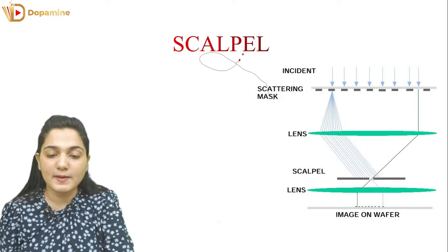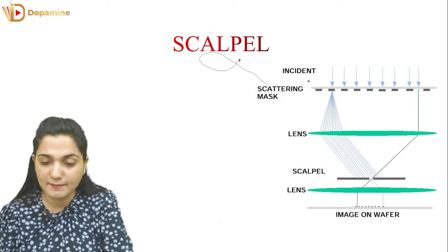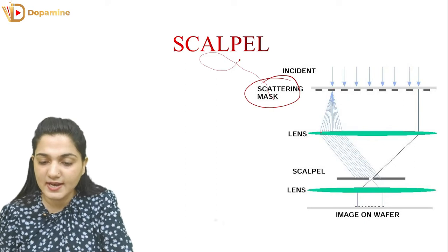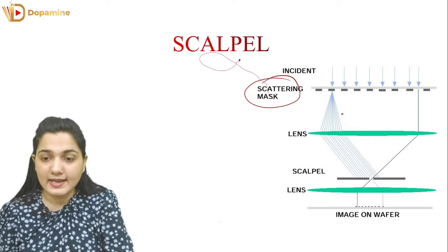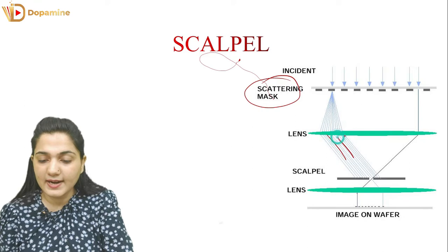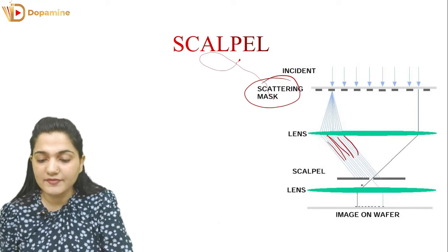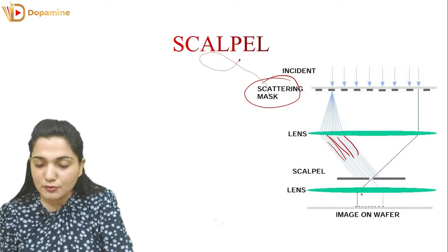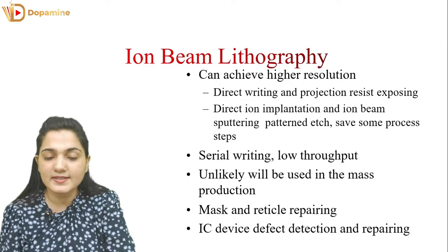Now we have the SCALPEL System. Here we have an Incident Electron Beam which is passed through a scattering mask — it will scatter. This Scattered Electron Beam passes through a lens, and we get an even Electron Beam. The even Electron Beam is passed through the SCALPEL aperture. We get the Electron Beam in a desired direction, and after directing it, we use a lens to focus the image — the Electron Beam — onto the Wafer at the desired location.